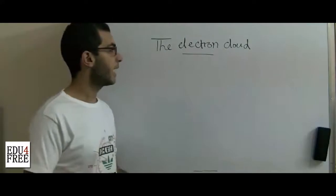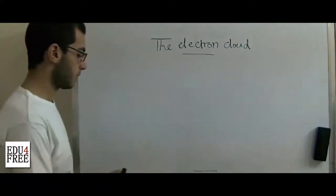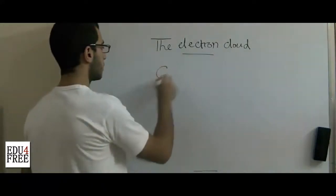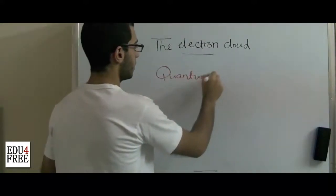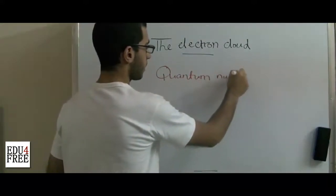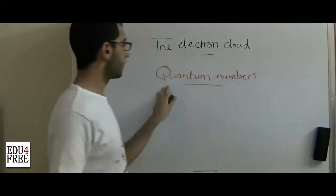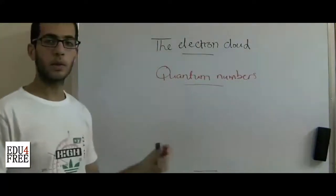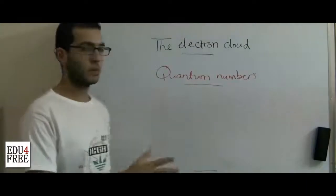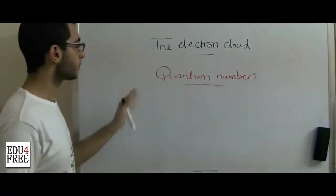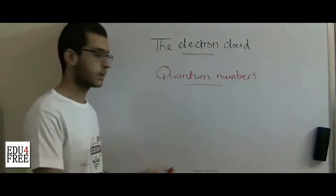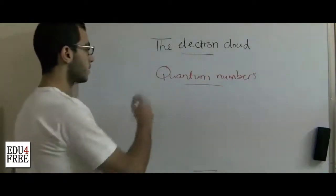This is it for today. And next time, we will talk about something called the quantum numbers. These quantum numbers define the orbitals where it's highly probable to find the electron. The electron cloud principle led the scientists to find these quantum numbers.